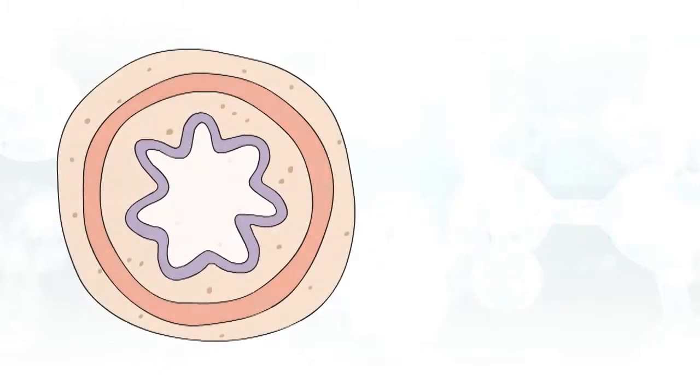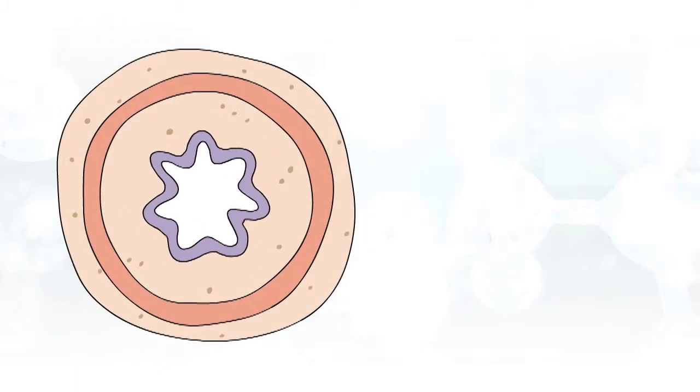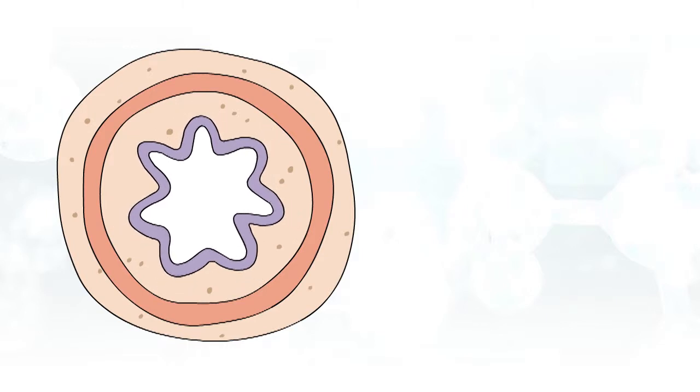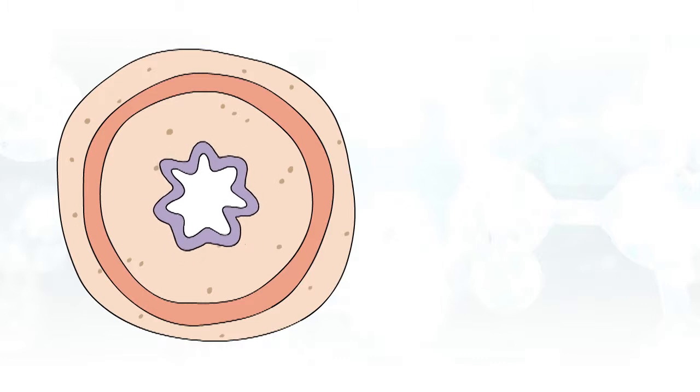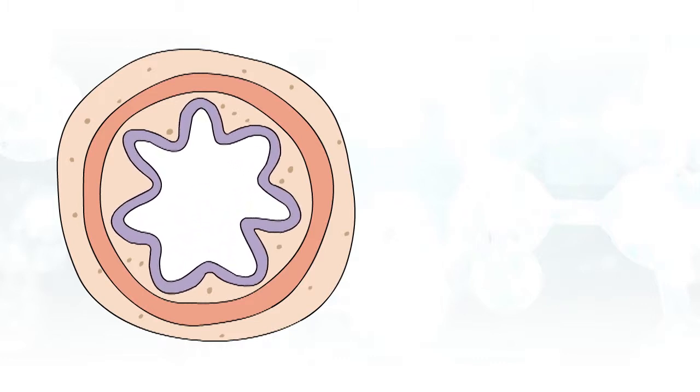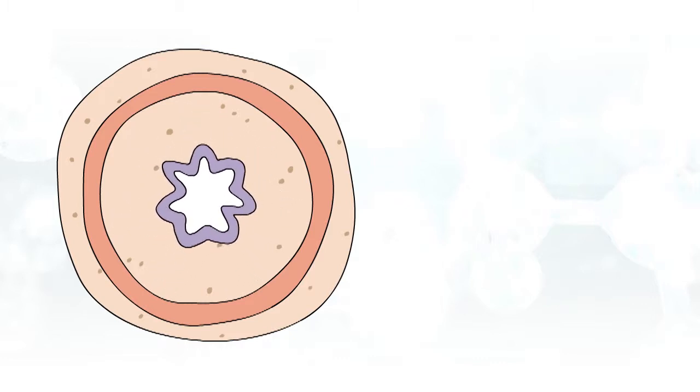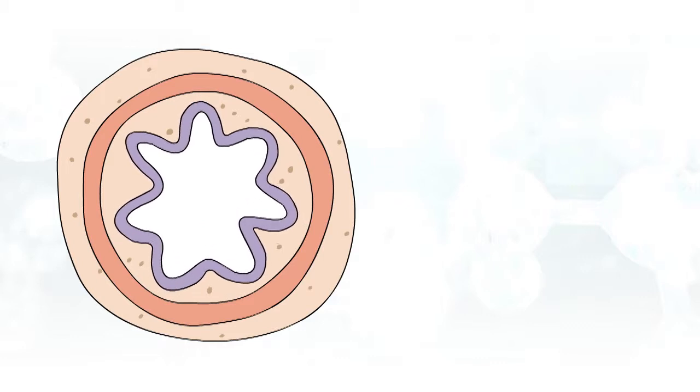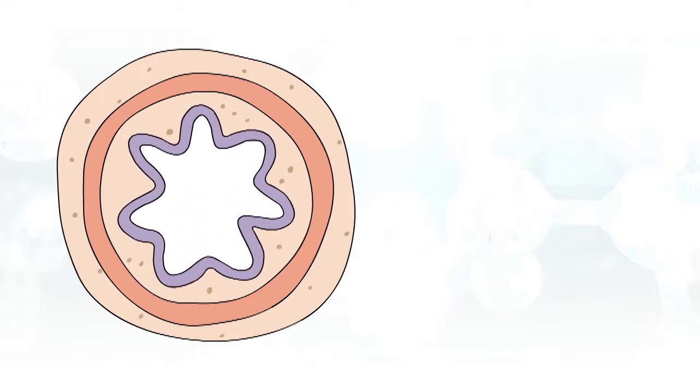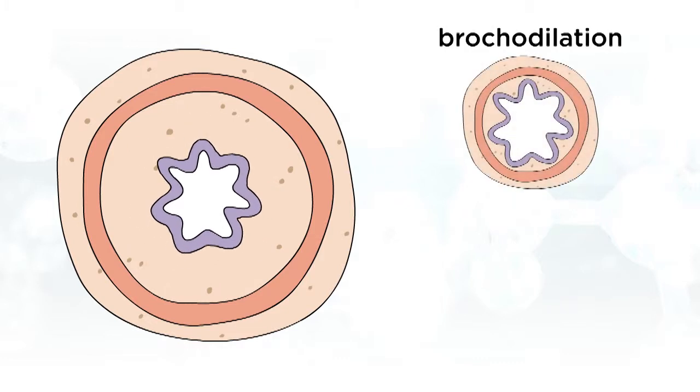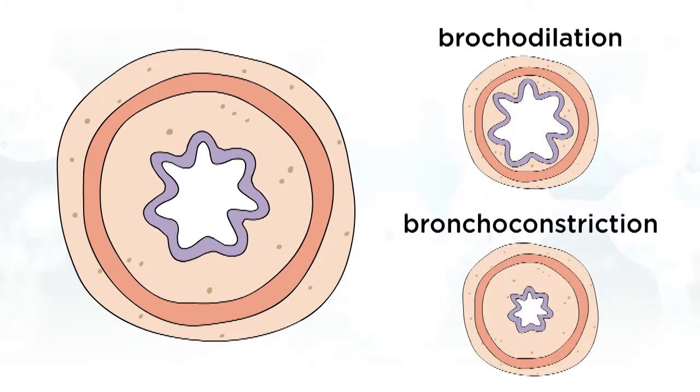As the air we inspire continues through the respiratory tract, it enters smaller bronchi and eventually the bronchioles. Bronchioles are extremely interesting because they have the ability to increase and decrease their diameter. This is accomplished by thick layers of smooth muscle in the walls of the bronchioles. The increase in diameter is called bronchodilation and the decrease is called bronchoconstriction.